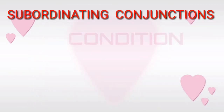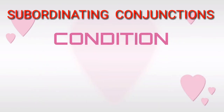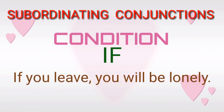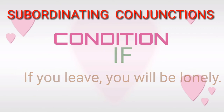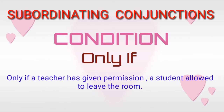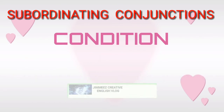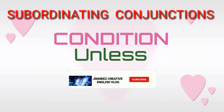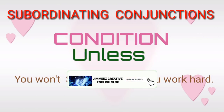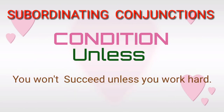Subordinating conjunctions of condition — 'if.' For example: 'If you leave, you will be lonely.' Subordinating conjunctions of condition — 'only if.' For example: 'Only if a teacher has given permission is a student allowed to leave the room.' Subordinating conjunctions of condition — 'unless.' For example: 'You won't succeed unless you work hard.'